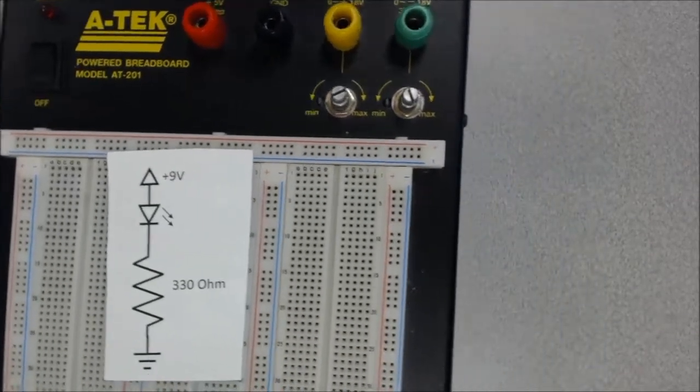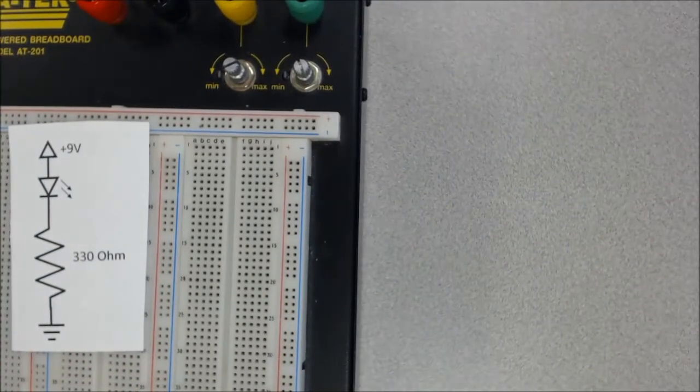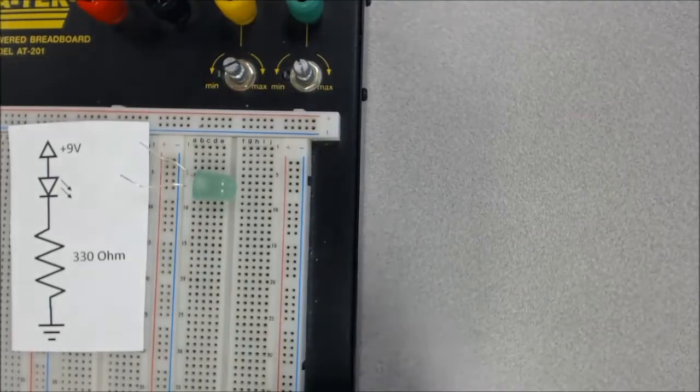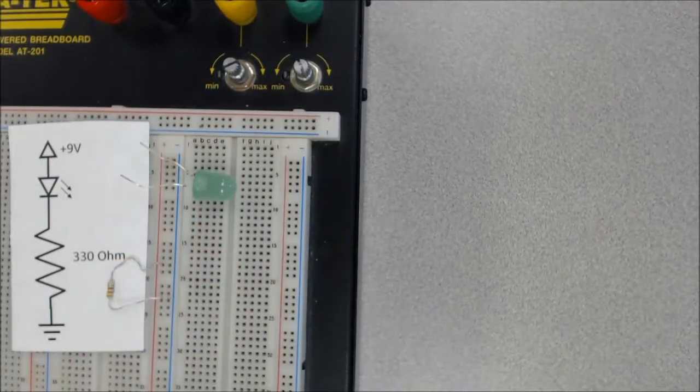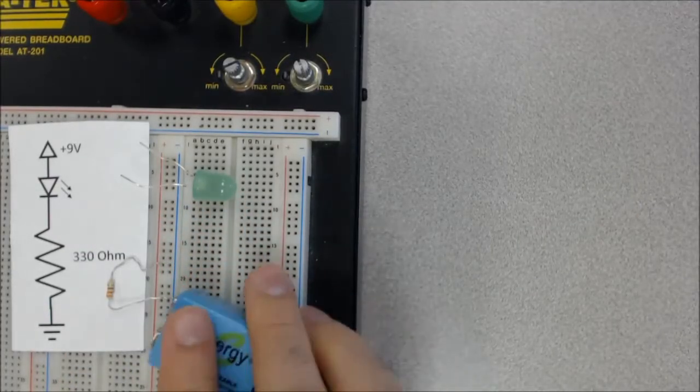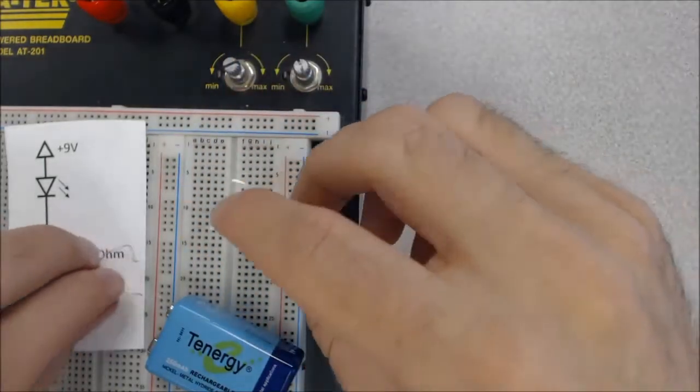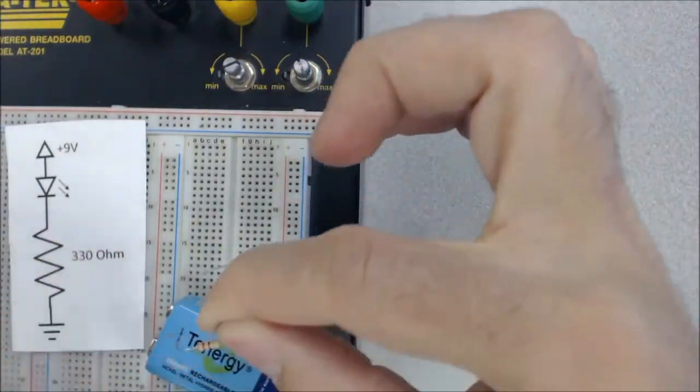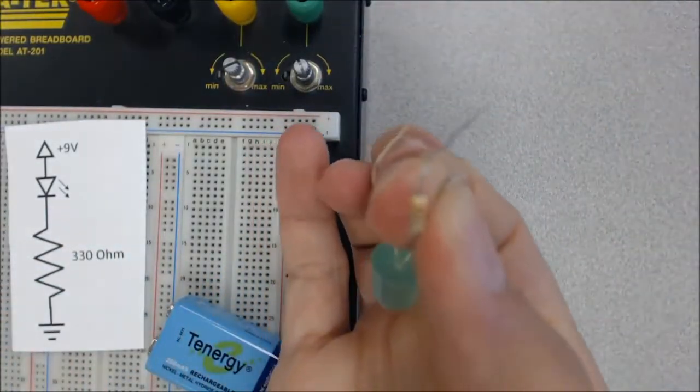So one way I could build this, if I push the breadboard off to the side, is I could take my three physical components, one which is the LED here, another which is the resistor, and the nine volt battery. And I could put these together like so, and I could literally just pinch them with my fingers so that the two components' wires are touching one another.